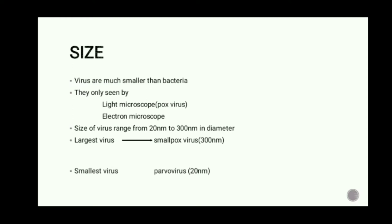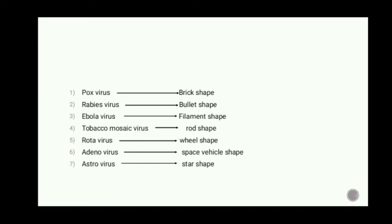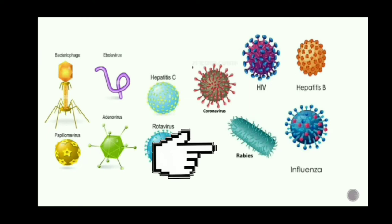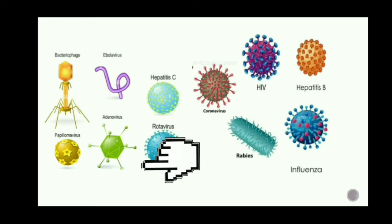Shape. The overall shape of a virus particle varies in different groups. Most animal viruses are spherical in shape. In the case of poxvirus, it is brick-shaped; rabies virus is bullet-shaped; Ebola virus is filament-shaped; tobacco mosaic virus is rod-shaped; rotavirus is wheel-shaped; adenovirus is space vehicle-shaped; and astrovirus has a star shape. We can see bullet-shaped rabies virus, filament-shaped Ebola, wheel-shaped rota, and space vehicle-shaped adenovirus in the illustrations.